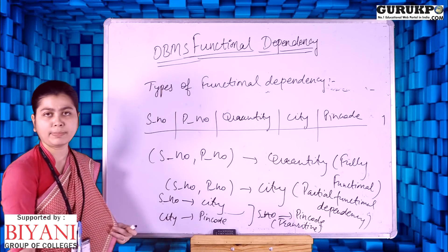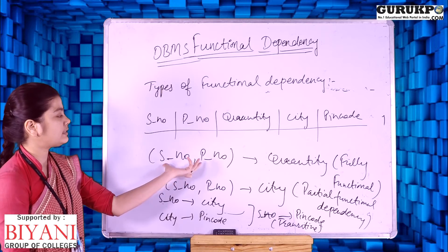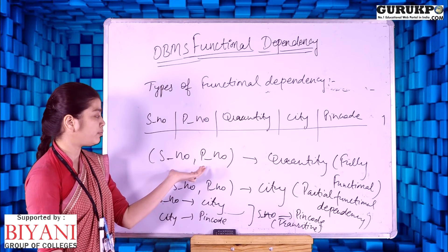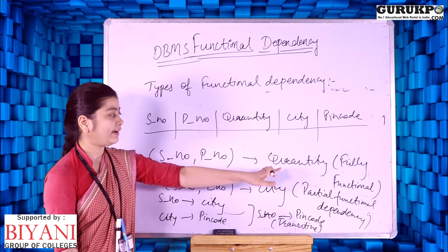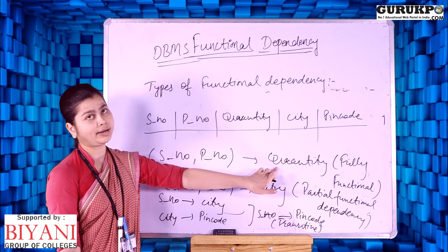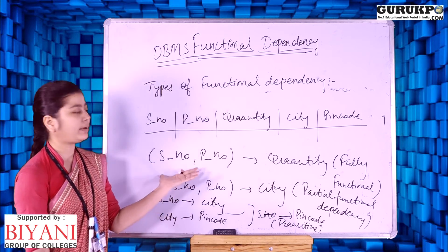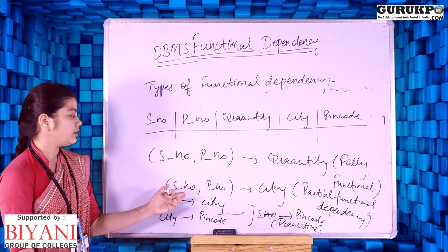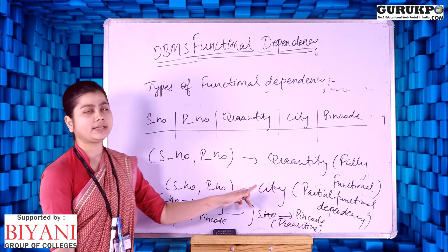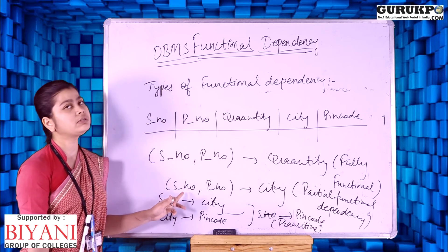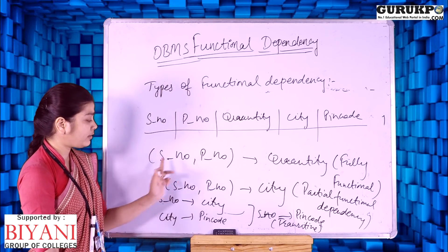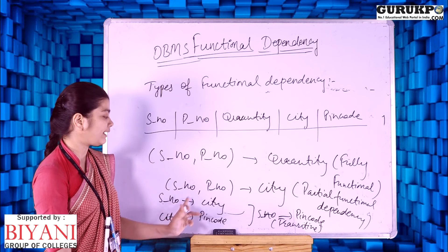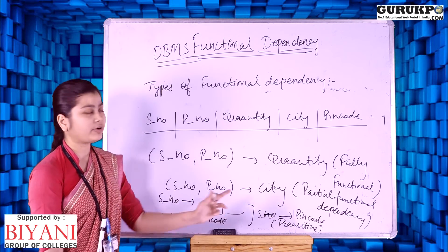So here we have all three functional dependencies. We have fully functional dependency, in which the quantity attribute fully functionally depends on serial number and product number, because from both attributes we can uniquely identify the values of the quantity attribute. City is partially dependent on serial number, since using serial number alone we can uniquely identify the city. And since city depends on serial number and pin code depends on city, we have transitive functional dependency between serial number and pin code.